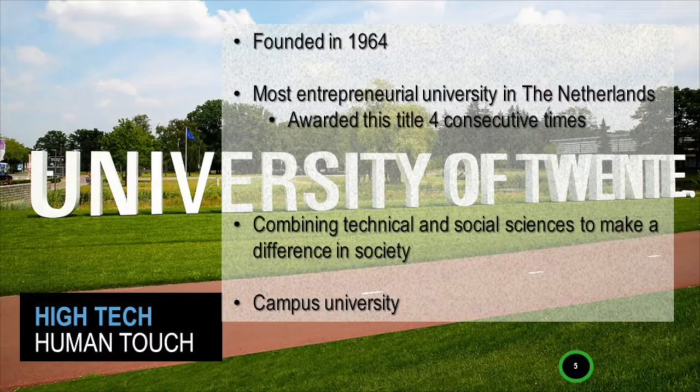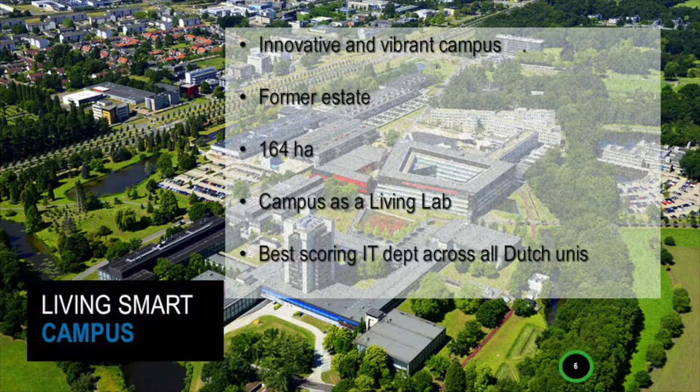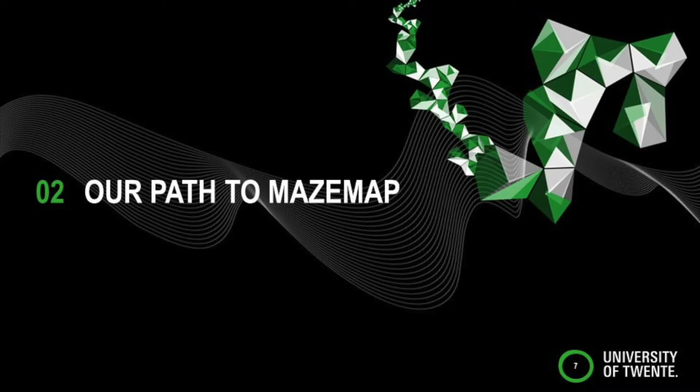About our university: we're a relatively young university — I think the youngest in the Netherlands. We were founded in 1964. We are the most entrepreneurial university and we're the only real campus university in the Netherlands. This shows an aerial picture of our campus grounds with several buildings. It's on a former estate, and we also use our campus as a living lab.